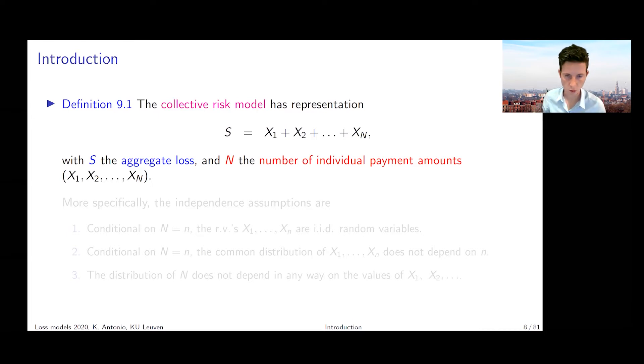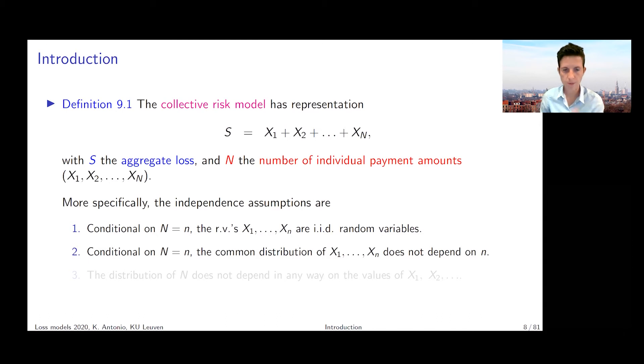In order to work with this random variable S, we're going to make a few independence assumptions. These are that given the value of N, the random variables X₁ up to Xₙ are i.i.d. Given the random variable N, the common distribution of those X's does not depend on N, and the distribution of N does not depend in any way on the values of the losses or the payment amounts. These are typical assumptions.